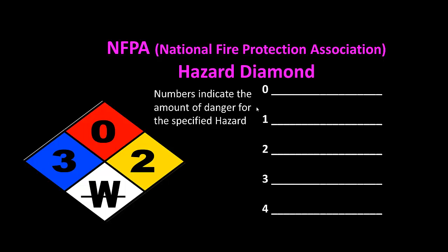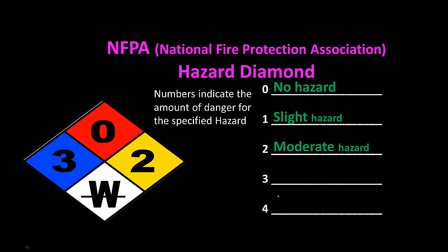The numbers on the diamond represent the danger level for the specified hazard: 0 represents no hazard, 1 is a slight hazard, 2 is a moderate hazard, 3 is extreme, and 4 is deadly.